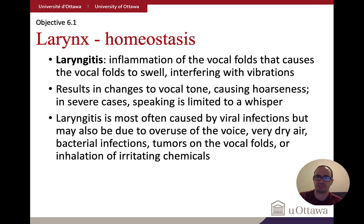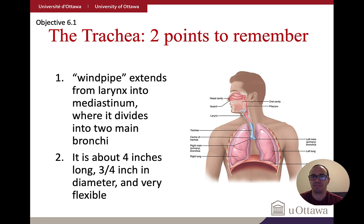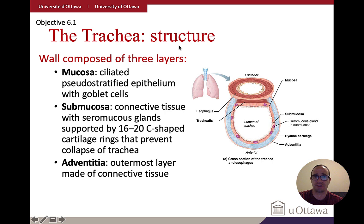The trachea — commonly called the windpipe — extends from the larynx down into the mediastinum, where the heart is. It is about four inches long, three-quarters of an inch in diameter, and is very flexible. The trachea has three layers: a mucosal layer, a submucosal layer, and an adventitia, with rings of hollow cartilage between them.